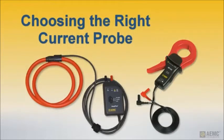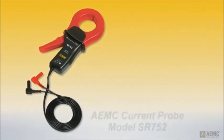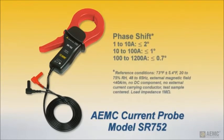To reduce measurement errors, you can select probes specially designed to reduce phase shift. For example, the AEMC AC current probe, model SR752, features a low phase shift of 2 degrees or less in the current range 1 to 10 amps, and 1 degree or less above 10 amps, under typical reference conditions.